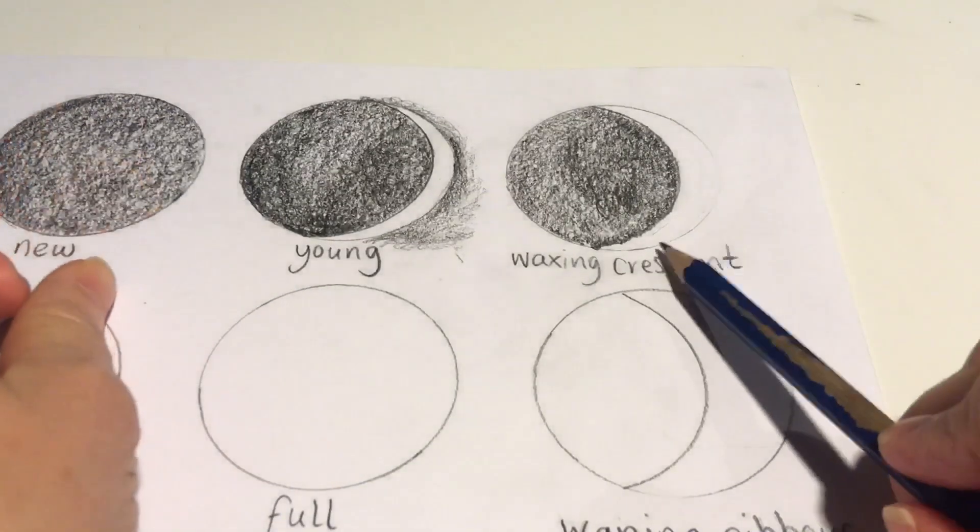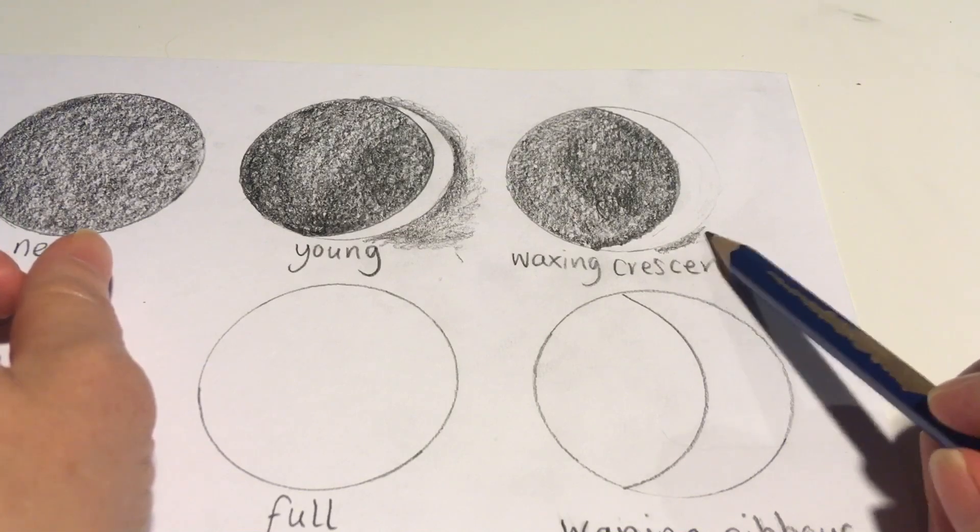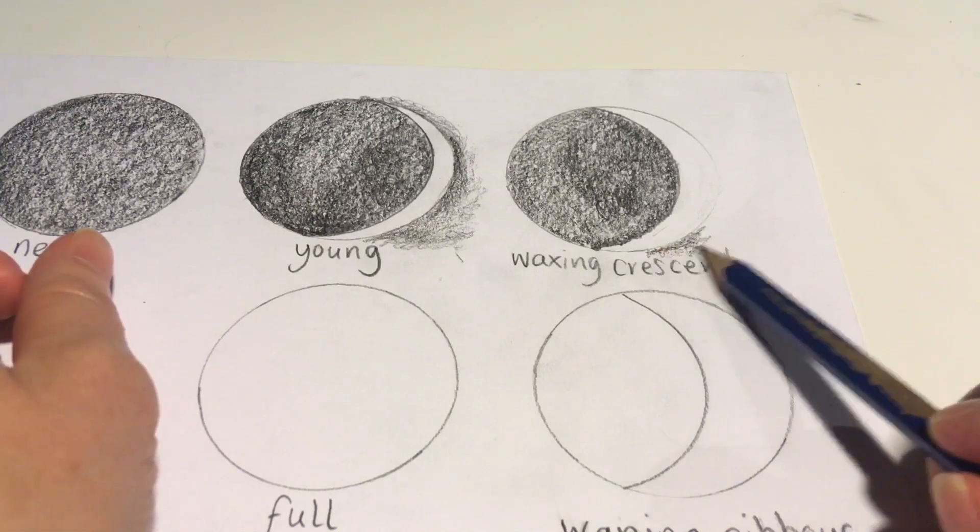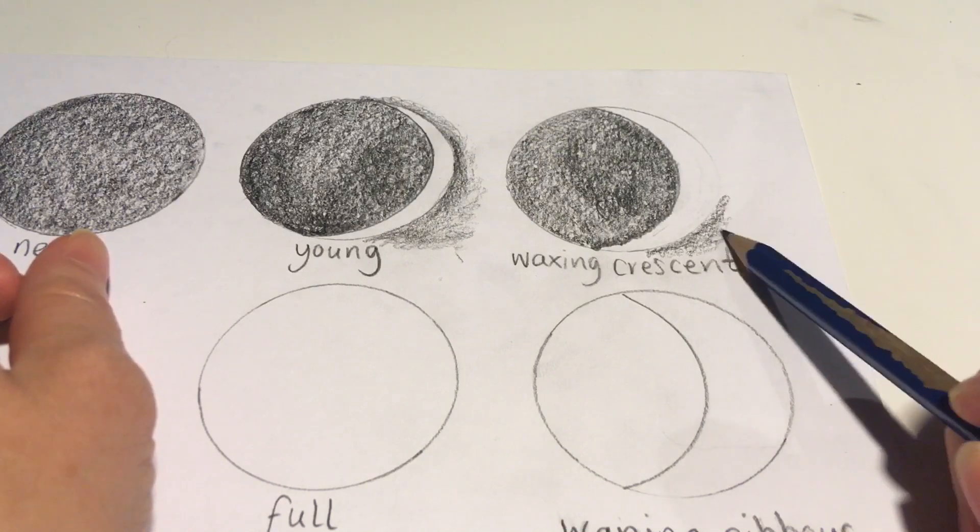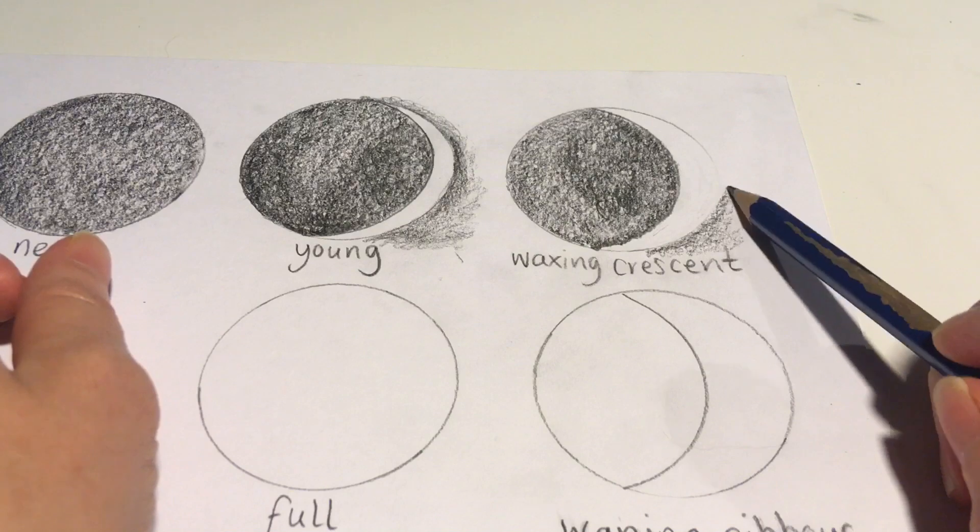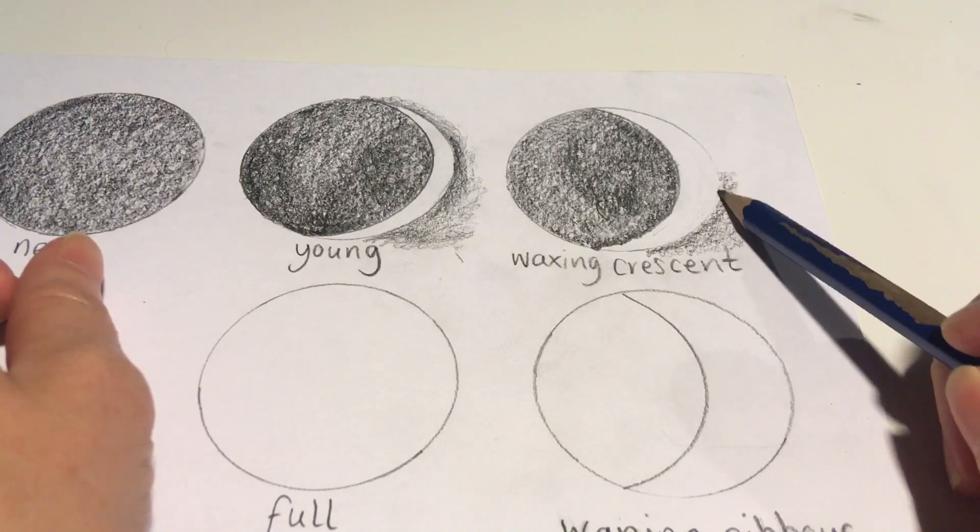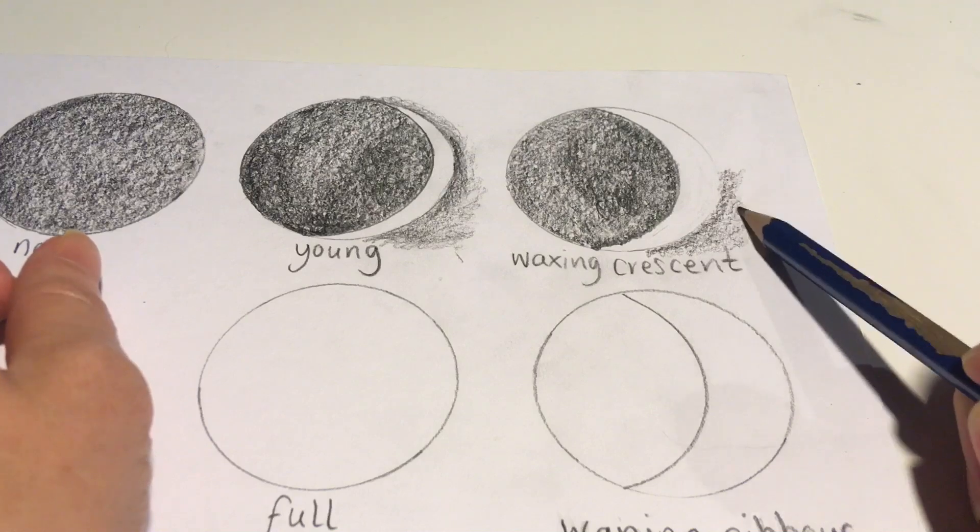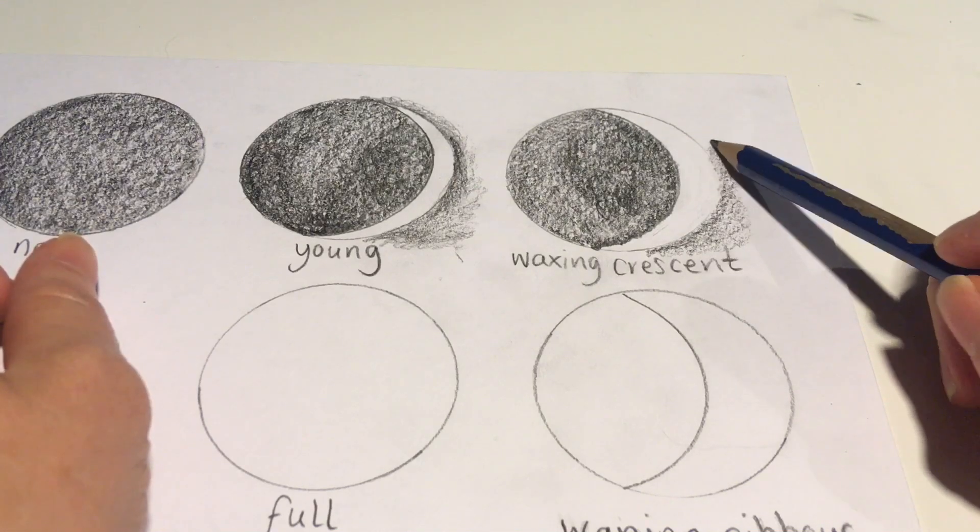You can also add some shading around the outside of the moon to make the lighter area stand out more, and then once you're happy with all of your darker areas of tone, you can start to make the moons look 3D as well by adding some lighter shaded areas to make them look more spherical.